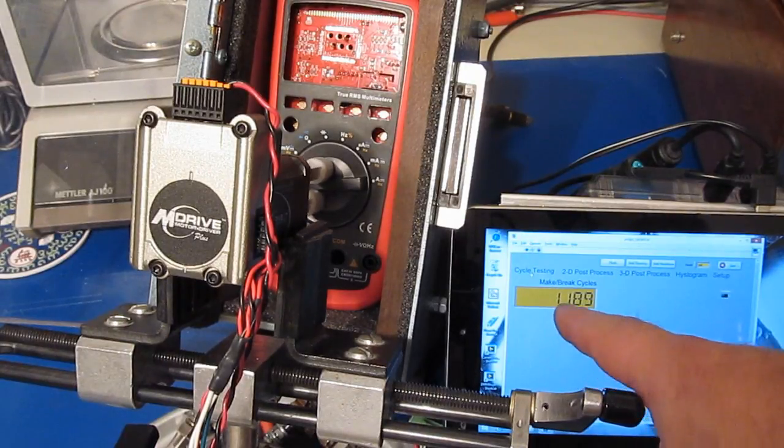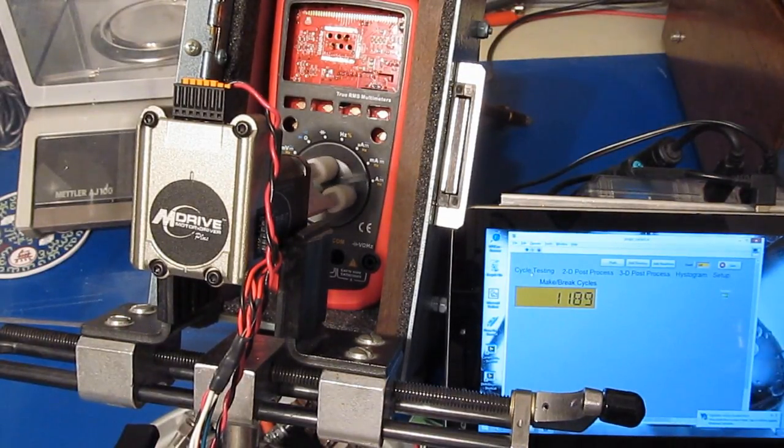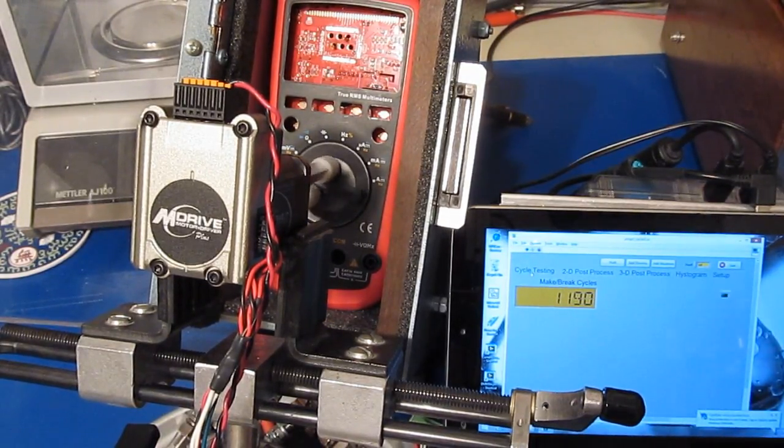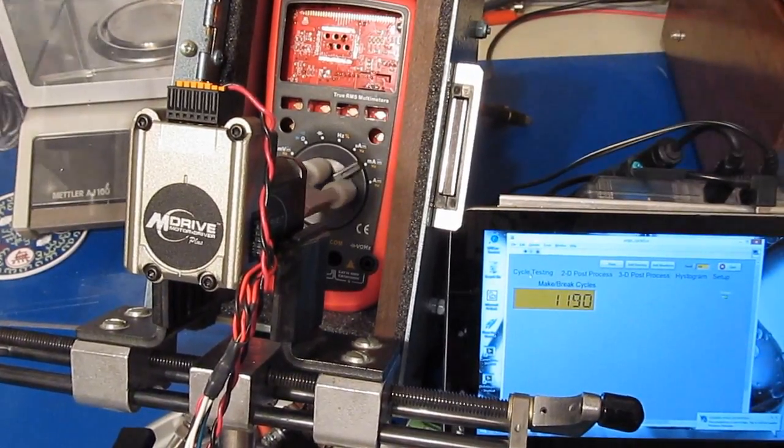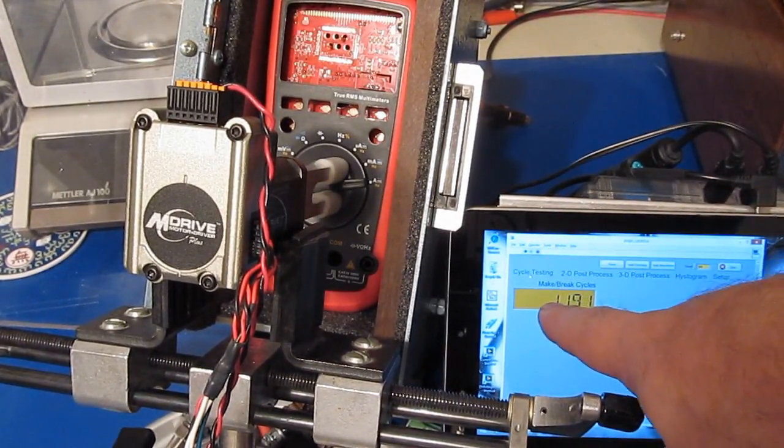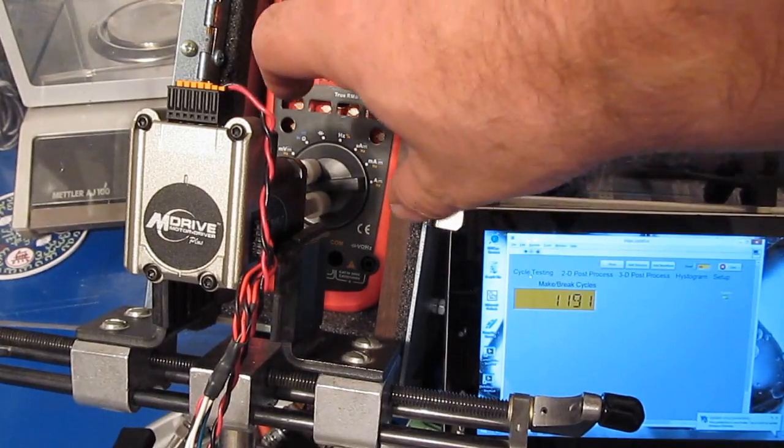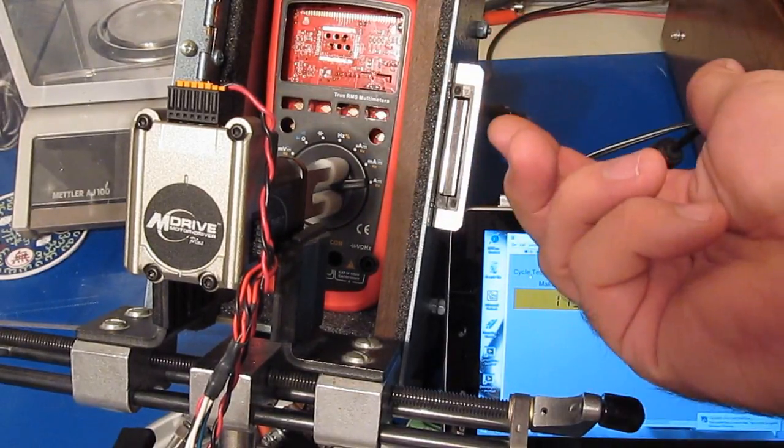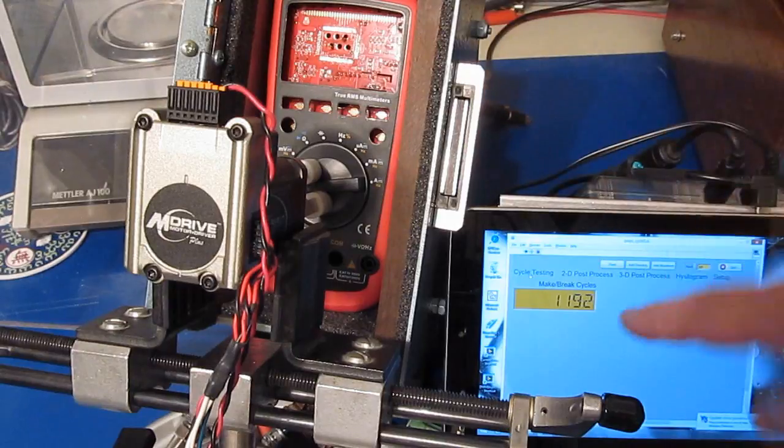Okay, so you can see we're at 1,189 cycles so far. So there's one thing I should mention: this is actually counting the number of cycles to go from off to amps and then back to off. That's one cycle.